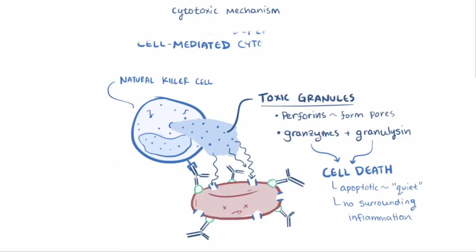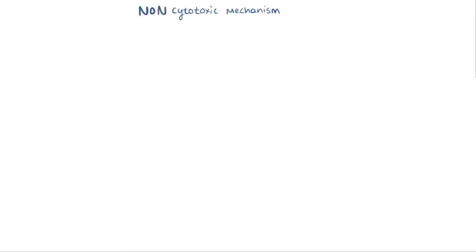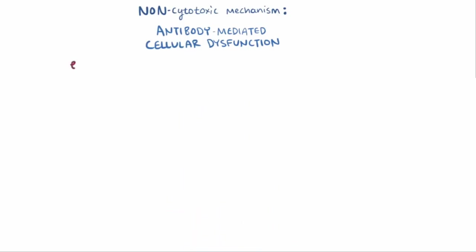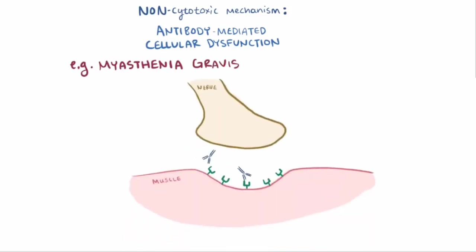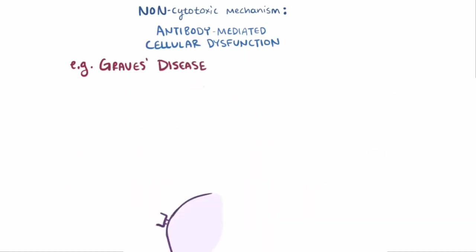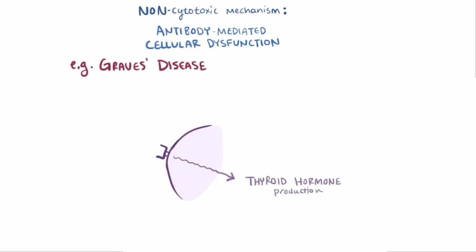So far all the mechanisms have led to cell death or cytotoxicity. There are, though, non-cytotoxic type 2 hypersensitivities as well, where the antibody just sort of disrupts function — called antibody-mediated cellular dysfunction. Sometimes when an antibody binds to its antigen, it just gets in the way and can change the way the cell is supposed to function. This is the case in the autoimmune disease myasthenia gravis, where antibodies specific for the acetylcholine receptor in muscles simply block the binding of acetylcholine, causing the muscles to not get stimulated and progressively weaken over time. This mechanism is also involved in Graves' disease, where antibodies target receptors that stimulate thyroid hormone production — but in this case, they not only get in the way, they actually activate the receptors, causing overproduction of thyroid hormone, or hyperthyroidism.